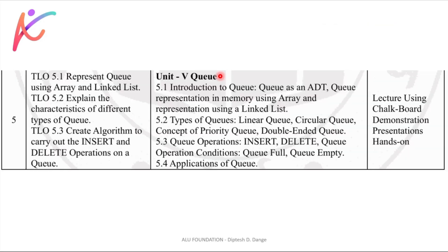Today we are going to cover point number 5.1, that is introduction to Q, and we will see Q as an ADT. ADT means abstract data type. We will see Q's representation using array and linked list.